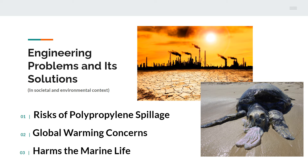The next question presented is about the engineering problems and their solutions in a societal and environmental context. The first one would be the risk of polypropylene spillage.